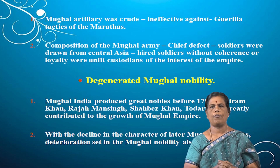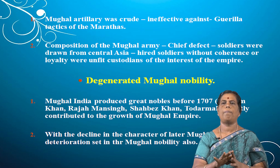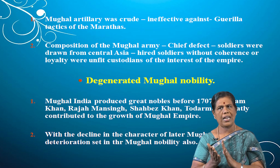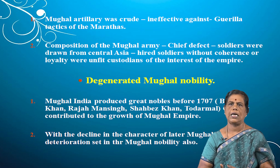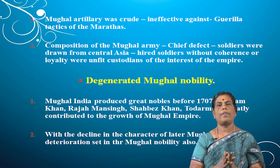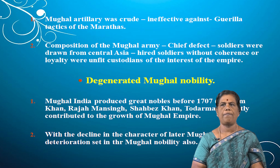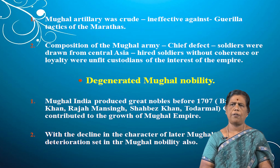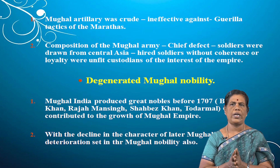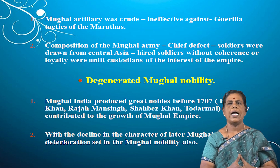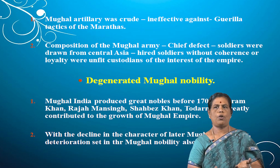Mughal artillery was introduced by Babur for the first time in India, and because of it he gained victory at the Battle of Panipat. But in the time of the later Mughals, the artillery was crude and ineffective against the guerrilla tactics of the Marathas and also against the European armies. The composition of the Mughal army was also a chief defect — soldiers were drawn from Central Asia on a hired basis, without any coherence or loyalty, and were unfit as custodians of the empire's interests.